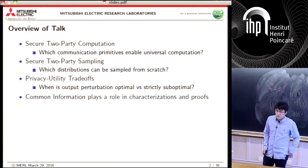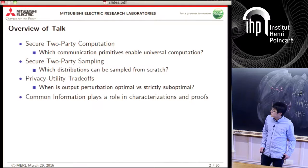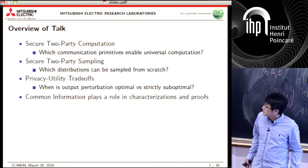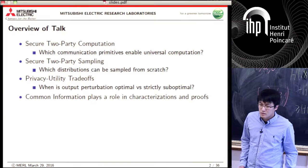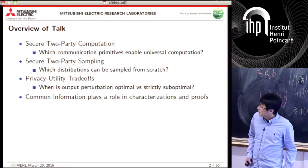I'll talk about three different problems. First, in two-party computation, we can ask which primitives are complete — that is, they allow any general secure computation to be performed. In secure two-party sampling, which is a special case of computation, we can ask which distributions can be securely sampled from scratch, using only error-free communication.